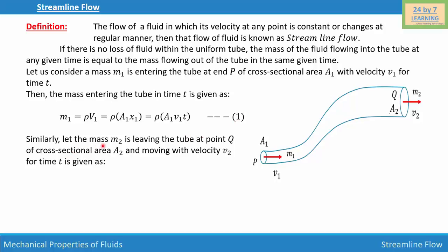Similarly, the mass m₂ leaving the tube at point Q of cross sectional area A₂ and moving with velocity v₂ for time t is given as m₂ = ρV₂ where ρ is the density of the fluid and V₂ is the volume of the fluid leaving at point Q. That equals ρA₂x₂.